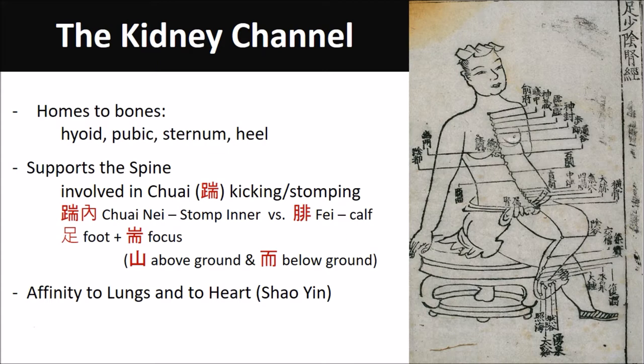The first thing most of us notice in this channel description is that there is no description of a channel that moves up from kidney 11 to kidney 16. There is no part of the channel that moves up from the pubic bone to the navel. There is, however, a description of the channel moving down from the navel to the pubic bone. From kidney 10, the channel moves on the inside of the thigh up to the perineal floor, where it intersects with Du 1, goes up the spine — I believe the front of the spine — then moves forward to meet the kidneys and down to meet the bladder. It is when the channel moves from the spine to the kidneys and the bladder that we get kidney 16 down to kidney 11.